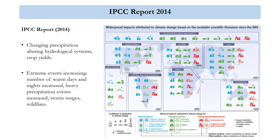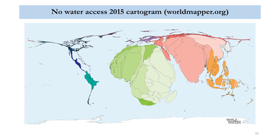One thing we know from climate change is that the impacts are only going to be exacerbated by existing inequalities. We live in an unequal world, and those inequalities will be amplified by the consequences of climate change. A good way to visualize some of these inequalities is by looking at what's called a cartogram. A cartogram takes a variable — in this case, the percentage of individuals in a given society who have no water access — and reshapes the region accordingly. For example, very few people in the United States don't have access to water, so the United States is shrunk down to a very small space. The largest areas are exaggerated — we can see where the impacts are concentrated: India, sub-Saharan Africa — very little impact here in the global north.